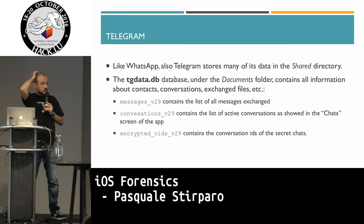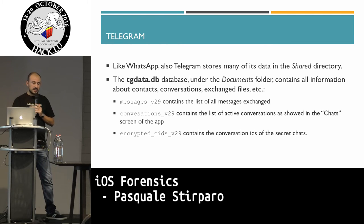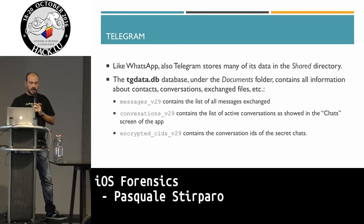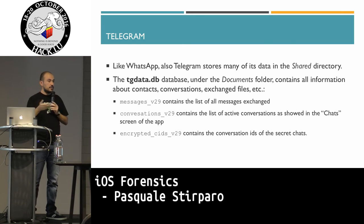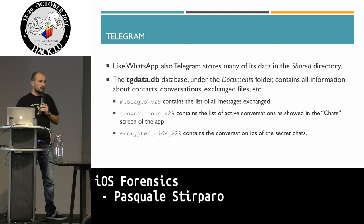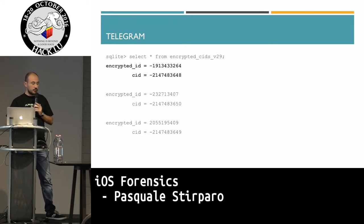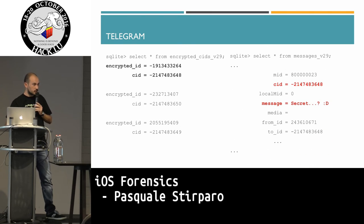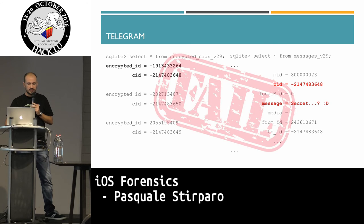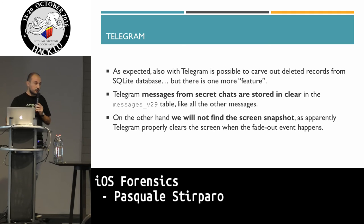Another application supposed to be even more secure is Telegram. This is the database you are interested in, and these are the main tables where you have messages and encrypted information about encrypted conversations. Telegram supports secret chats. If you search in the encrypted seed you get an ID, but if you search in the messages table, it's just a flag — your secret chat is just flagged as secret, but it's in clear text on your device. Telegram does not store the screenshot though — they manage that properly.